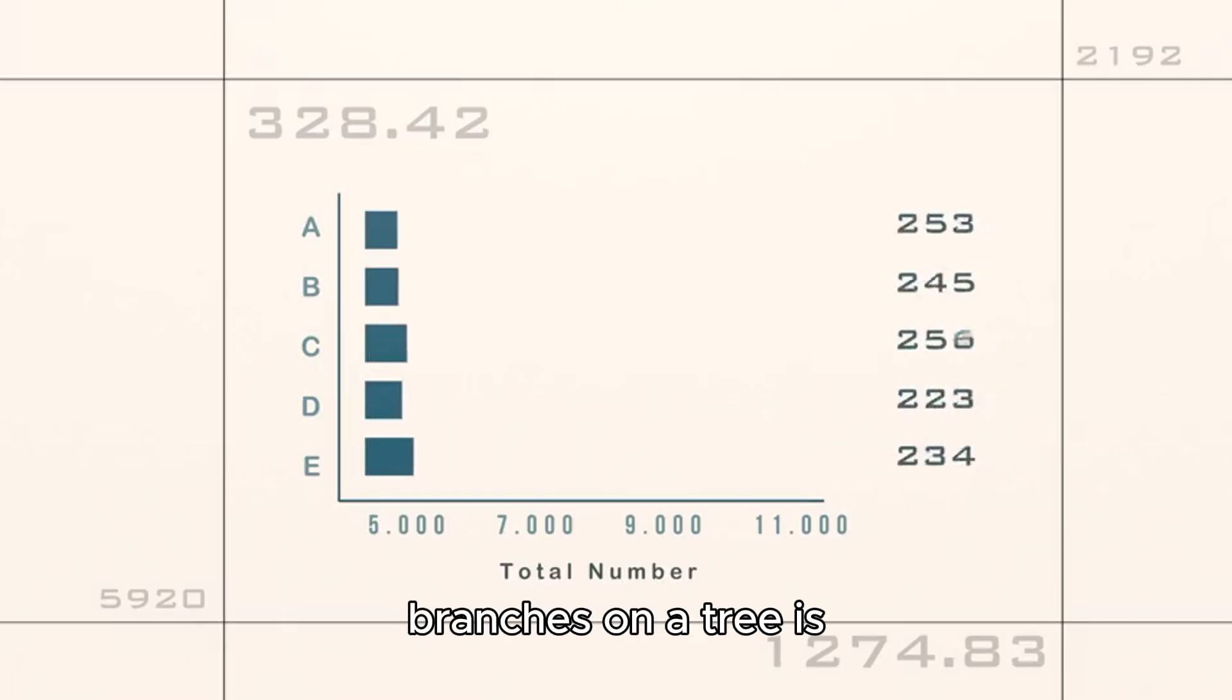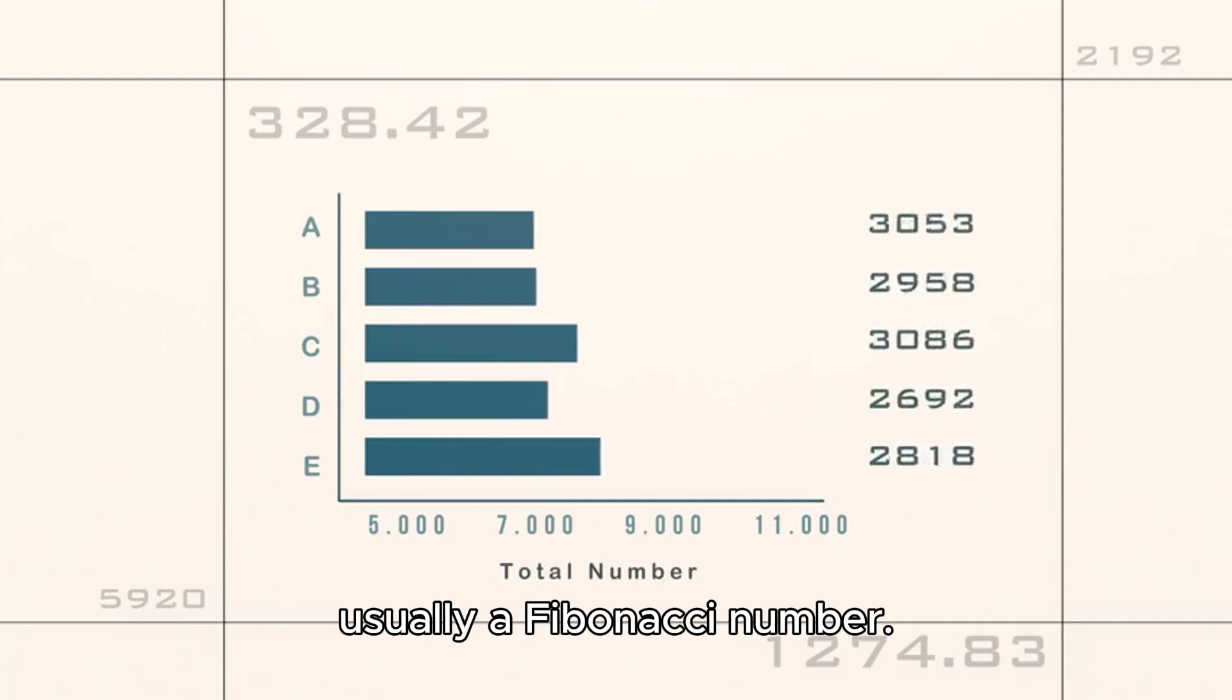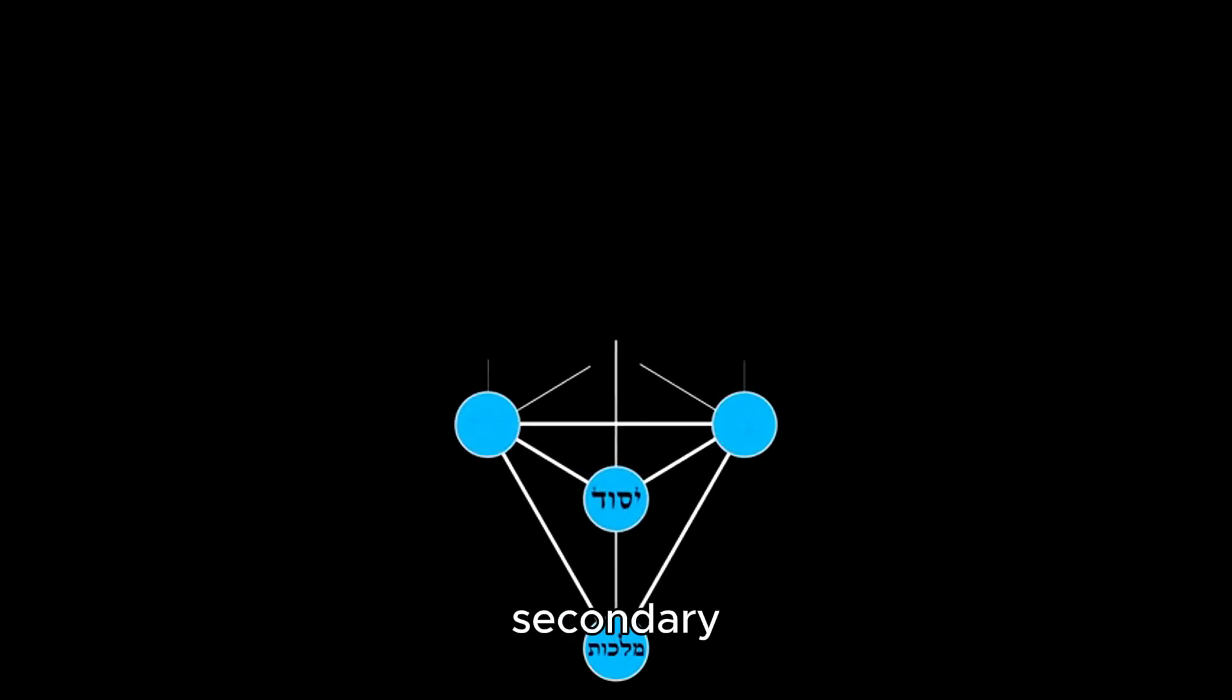The number of branches on a tree is usually a Fibonacci number. For example, a typical tree has one trunk, two main branches, three secondary branches, five tertiary branches, and so on.